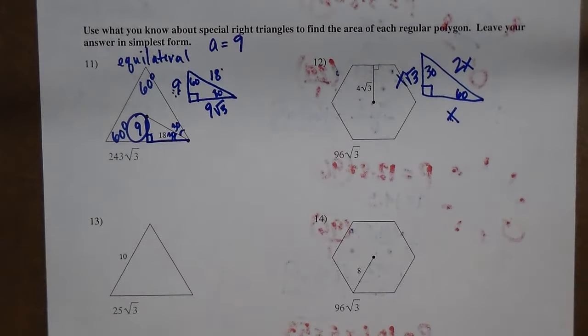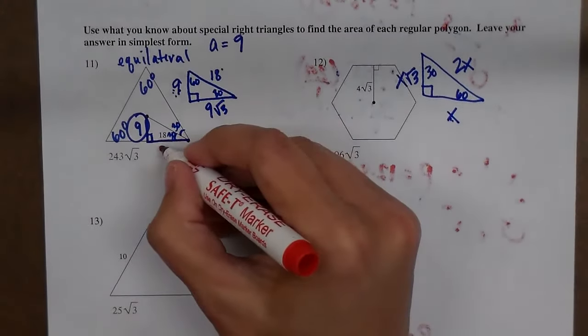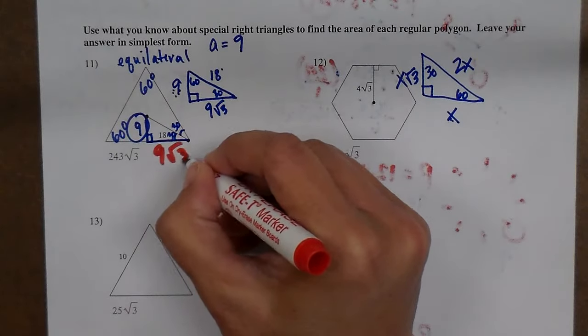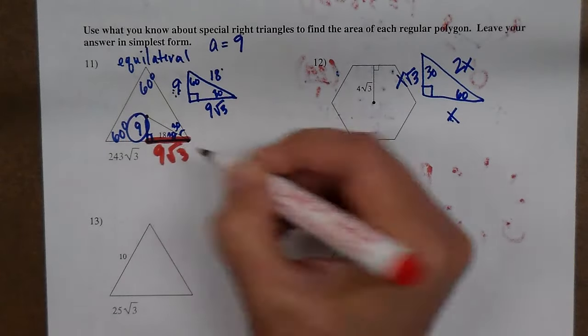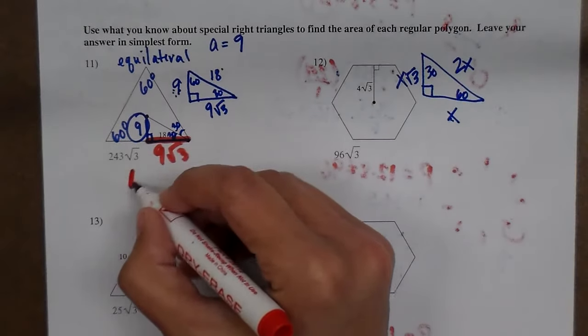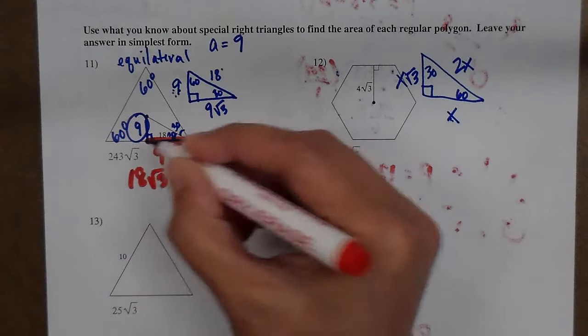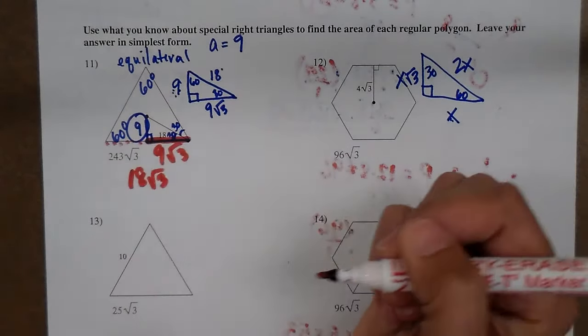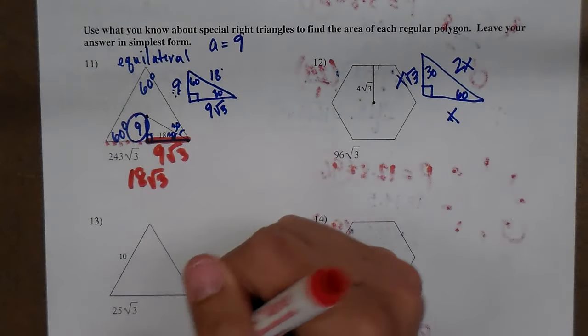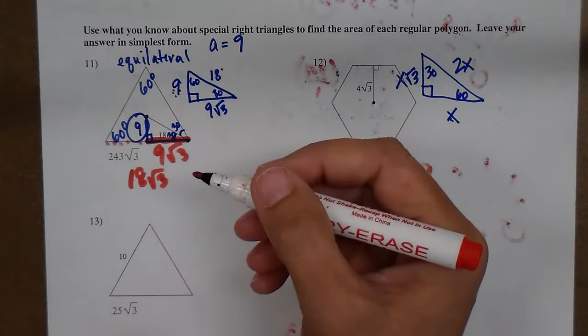Now I've got to find my perimeter. This piece right here is 9 square roots of 3. Halfway. So what's it going to be all the way across? 18 square roots of 3, all the way across, because it's double.